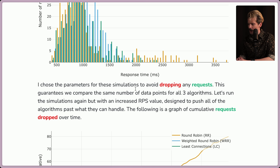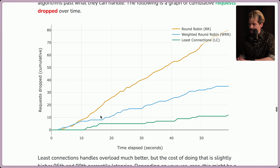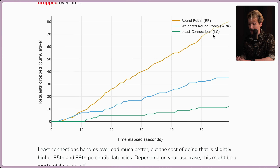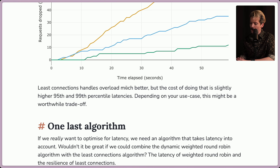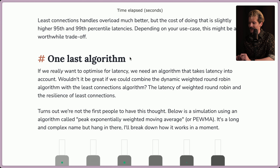I chose the parameters for these simulations to avoid dropping any requests, ensuring we're comparing the same number of data points for all three algorithms. Running again with an increased RPS value designed to push all algorithms past their limits, the cumulative dropped requests graph shows round robin dropping significantly more requests, weighted round robin doing better but still dropping some, and least connections lasting much longer before starting to drop — and generally dropping far fewer. Least connections handles overload much better, but the cost is slightly higher 95th and 99th percentile latencies. Depending on your use case, this might be a worthwhile trade-off.